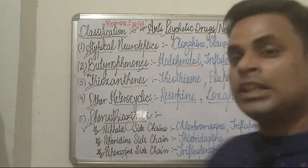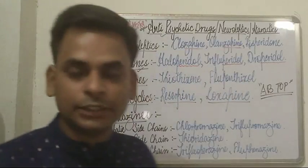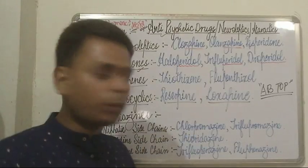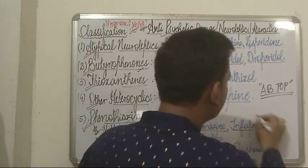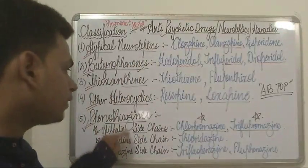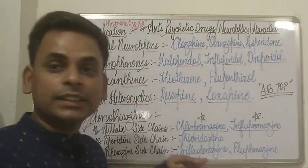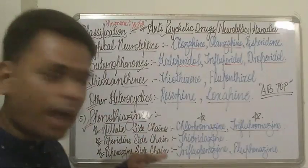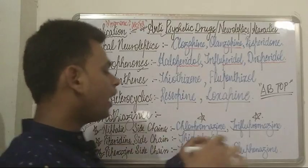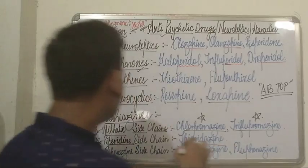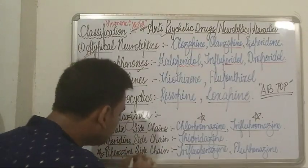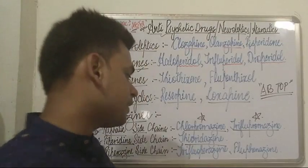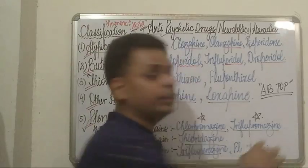The 'P' of TOP refers to the phenothiazines, which have three subclasses. The first subclass has an aliphatic side chain — the famous drugs are chlorpromazine and triflupromazine. The second subclass has a piperidine side chain — the famous drug is thioridazine. The third subclass has a piperazine side chain — the famous drugs are trifluoperazine and fluphenazine.